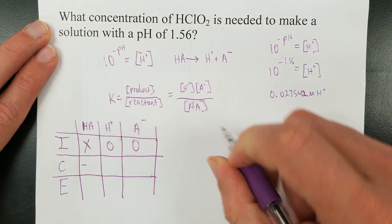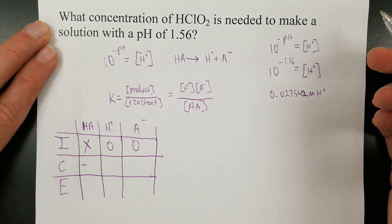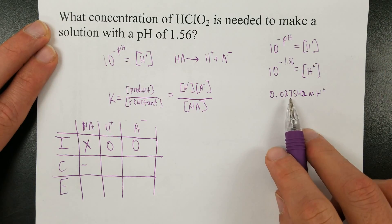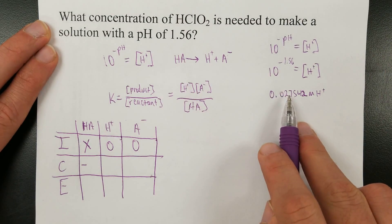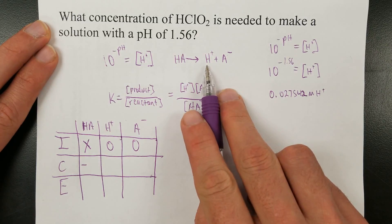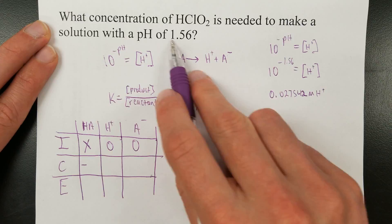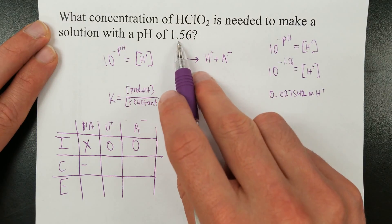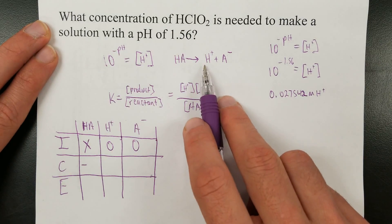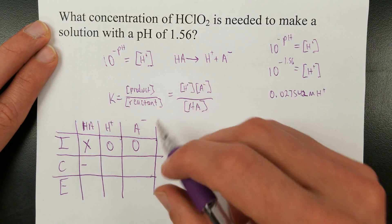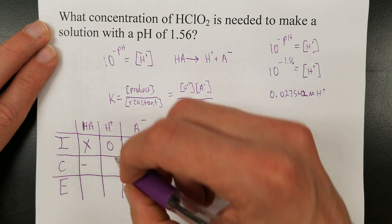Well, the change is however much it dissociates. So what we found here is that the hydrogen ion concentration will end up being this, because that's what it would take to make pH of 1.56. It would have to be this much hydrogen in solution. So, however much hydrogen is formed, it's this much.